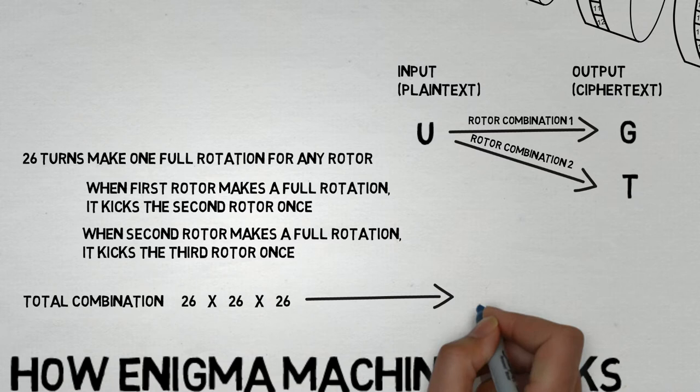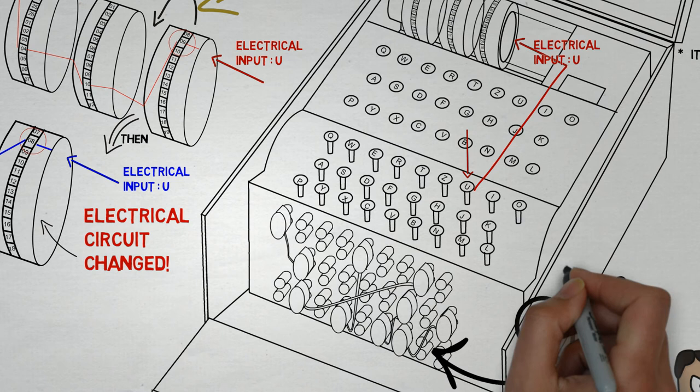Doing a little bit of math, this meant that the rotors could give 26 cubed possible combinations. But that's not all. In addition to that, at the front of the machine there is a plug board.